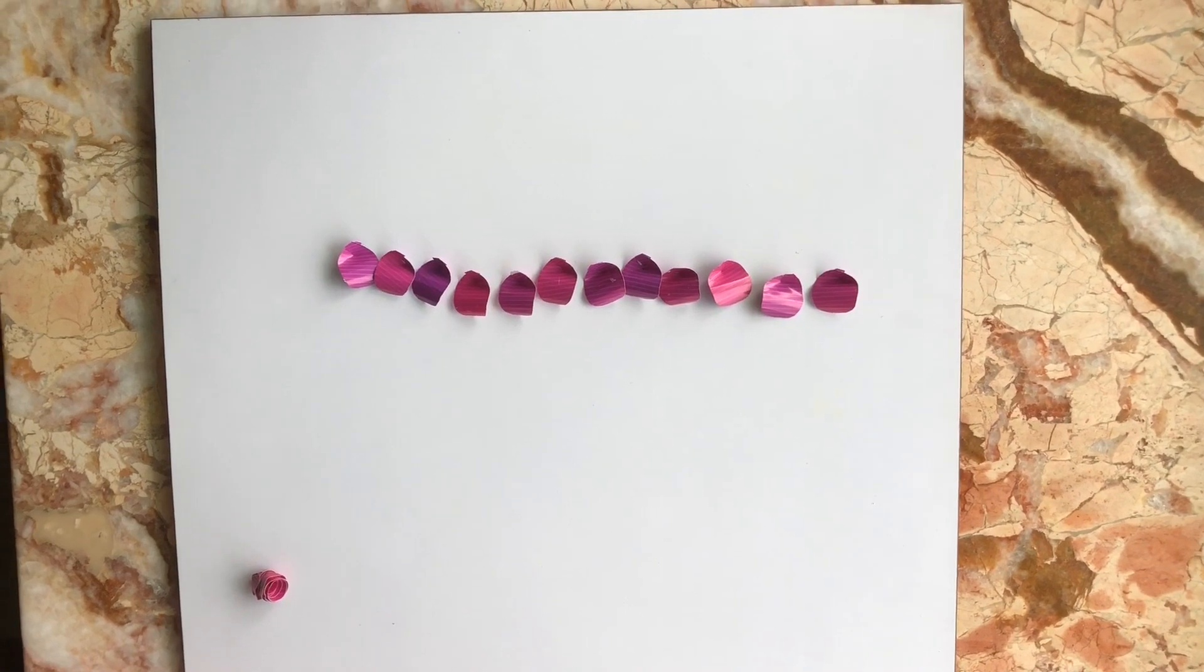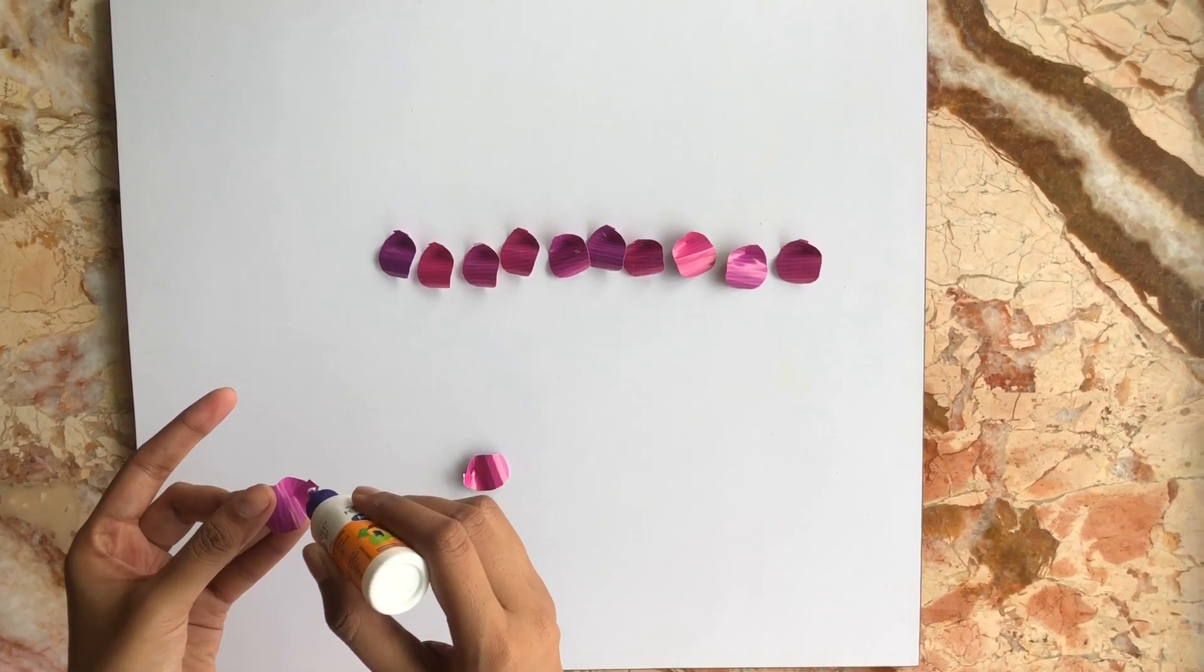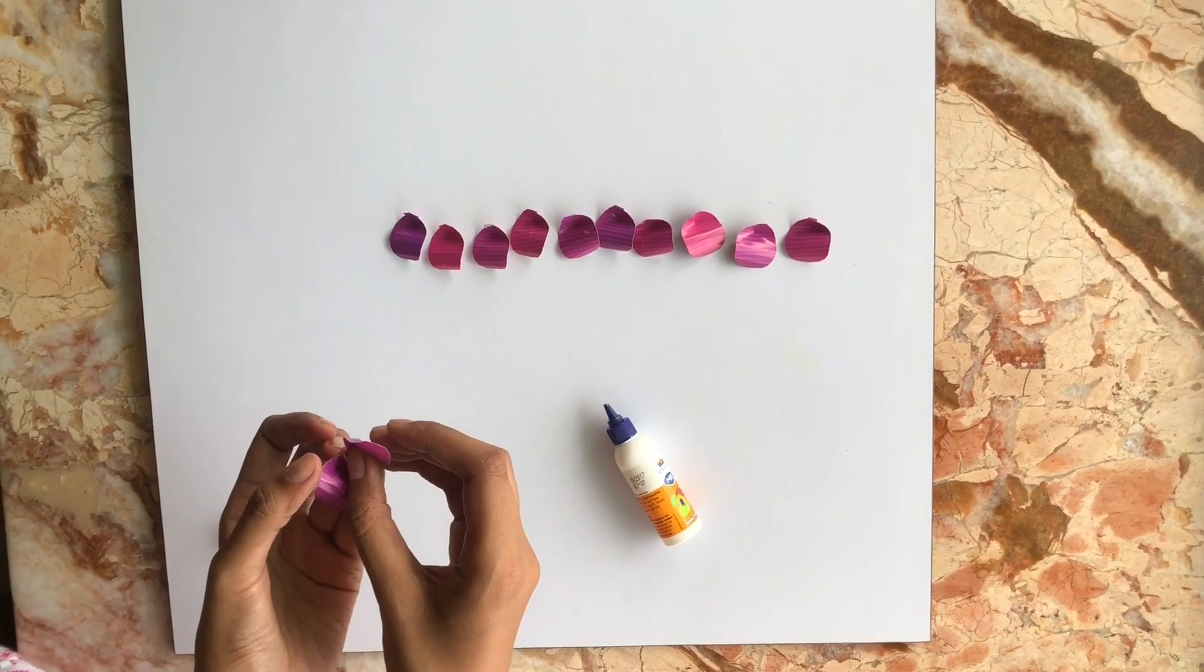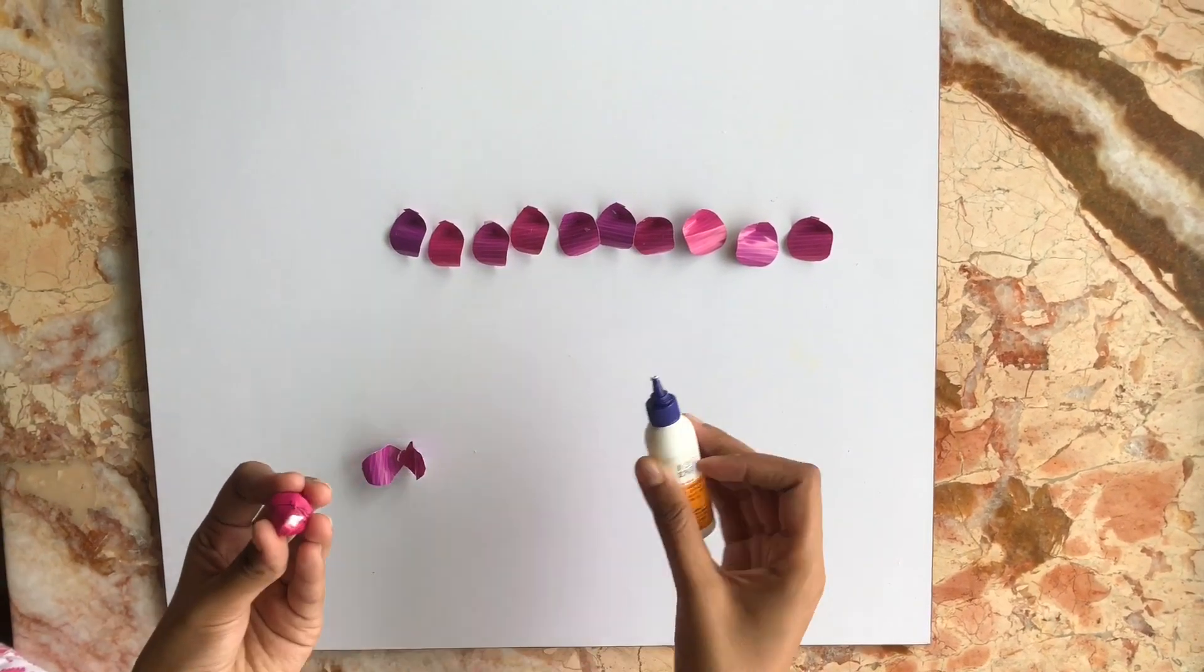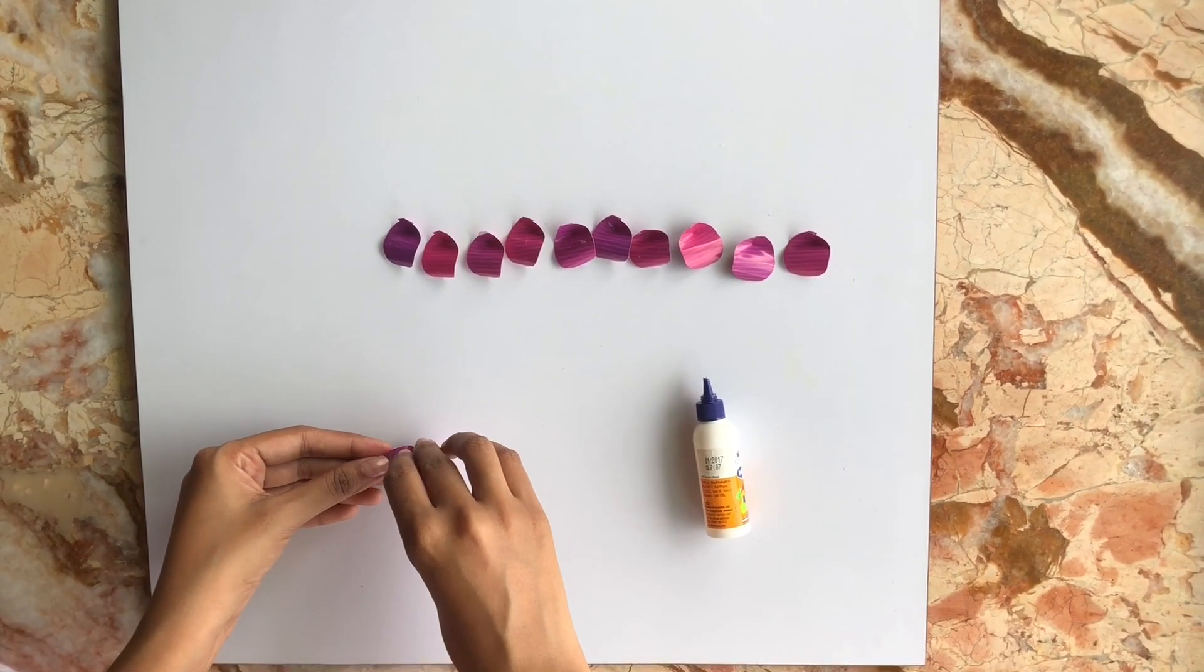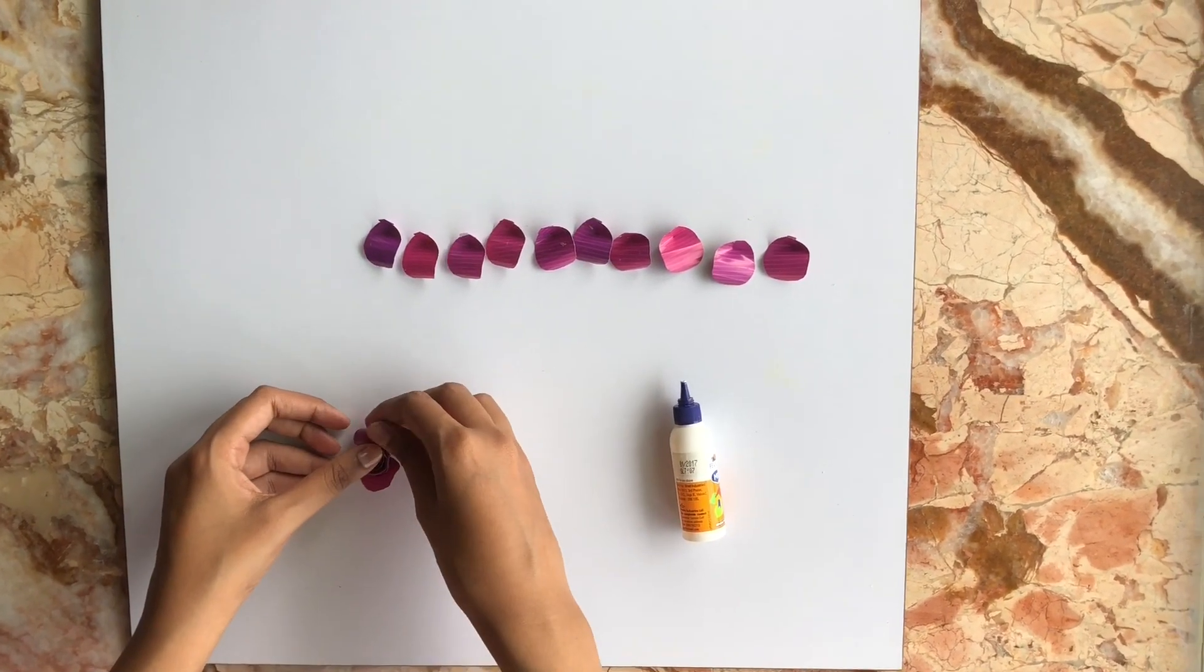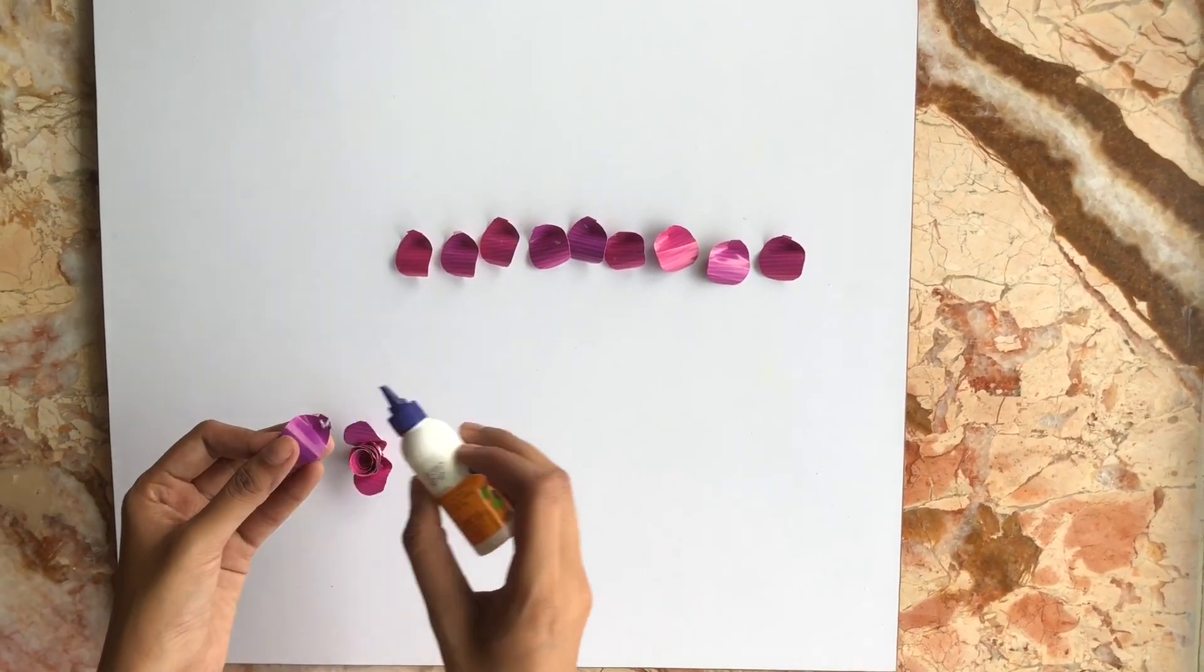It's now time to stick the petals on the bud. Take two petals, place a little glue on the base of one, and paste the edges slightly. Placing glue at the bottom of the bud, we fix the bud onto this petal. Taking one petal at a time, we place them along the bud.